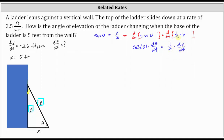We're treating Z as a constant here because we know it is a constant — it's the length of the ladder, we just don't know what that length is. For example, if Z were 10, the derivative of one-tenth times Y with respect to T would be one-tenth times dy/dt.